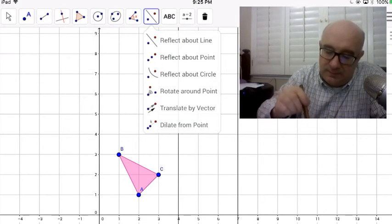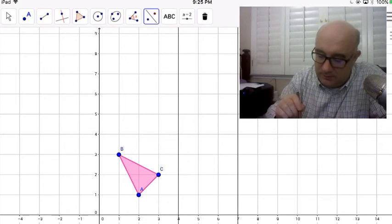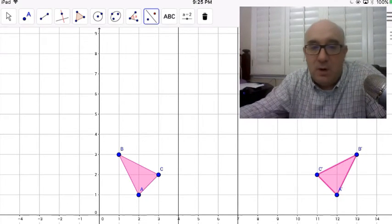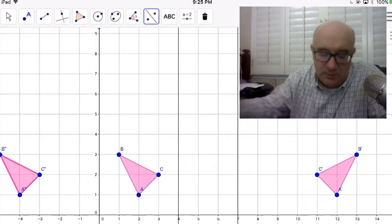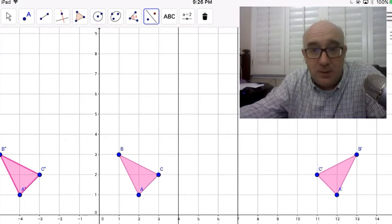So let's reflect our triangle over first x equals 7. Way out there. And then reflect that over x equals 4. Whoa! Went the other way.